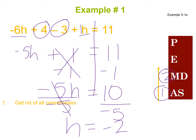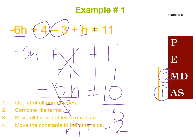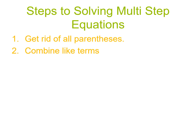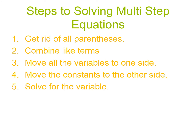There were no parentheses to get rid of, but I did combine like terms to simplify the left-hand side. Then I kept the variable on the left, moved the constants to the other side, and solved for h. As a reminder: on every problem, go through the process — get rid of parentheses if you have them, combine like terms, move the variable to one side and numbers to the other, then solve.